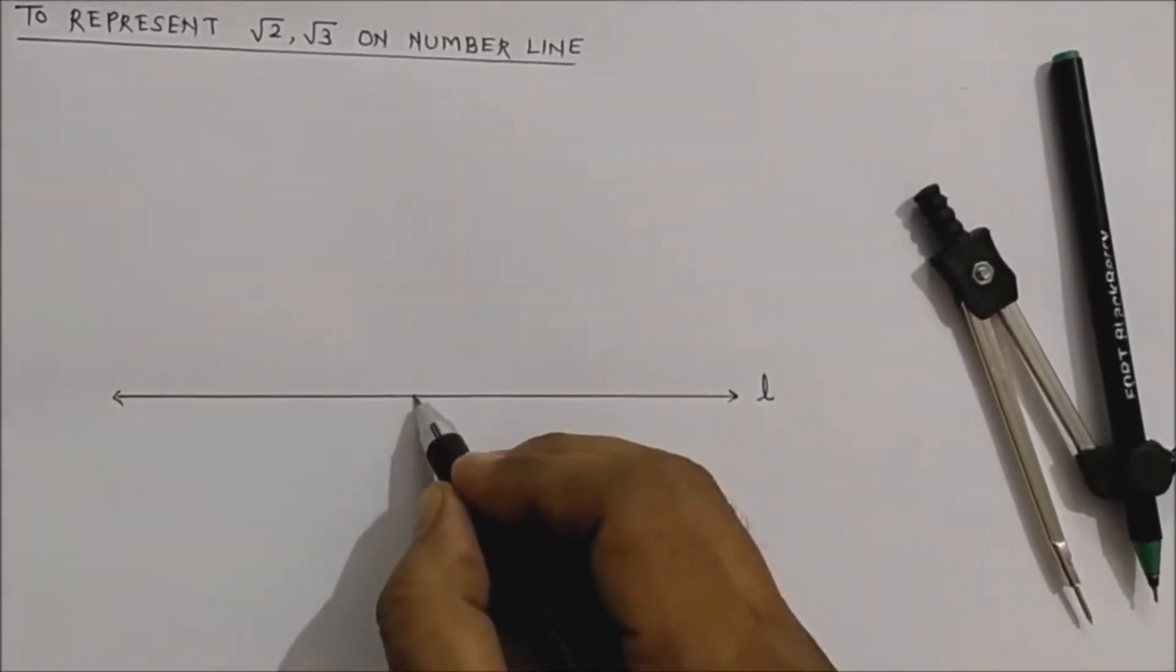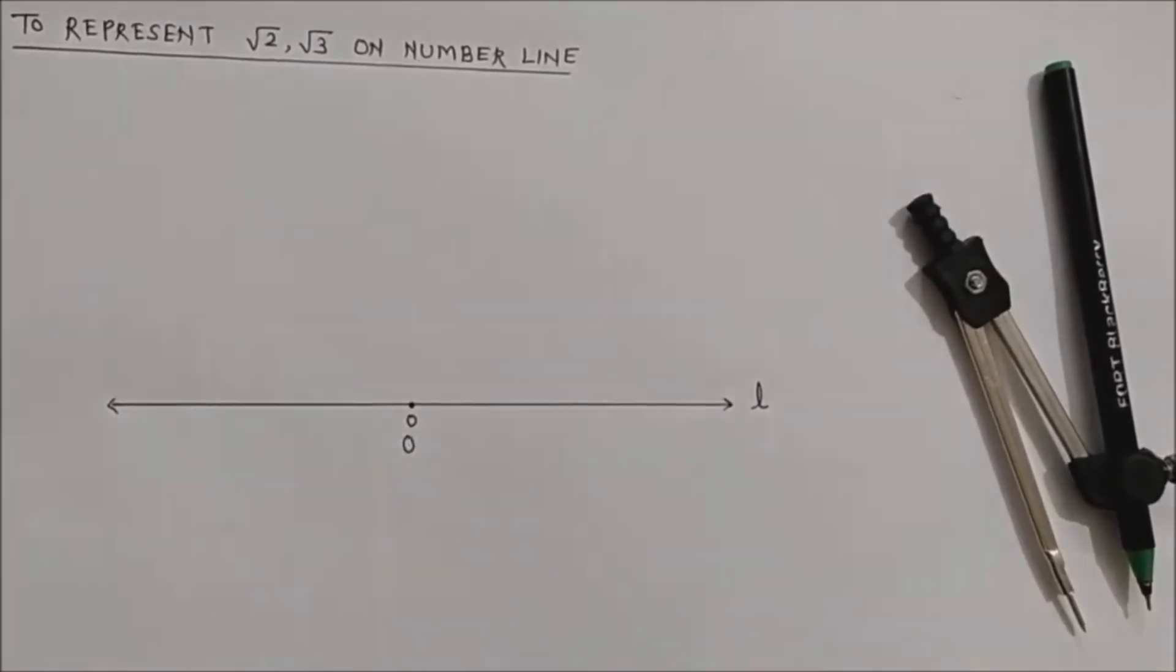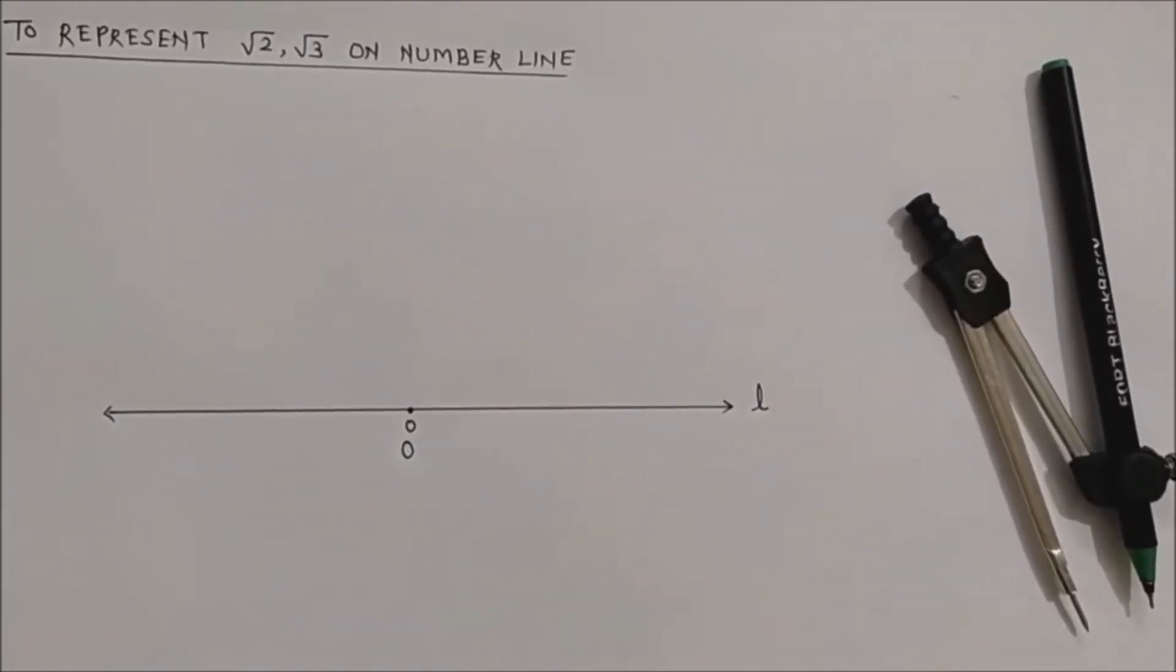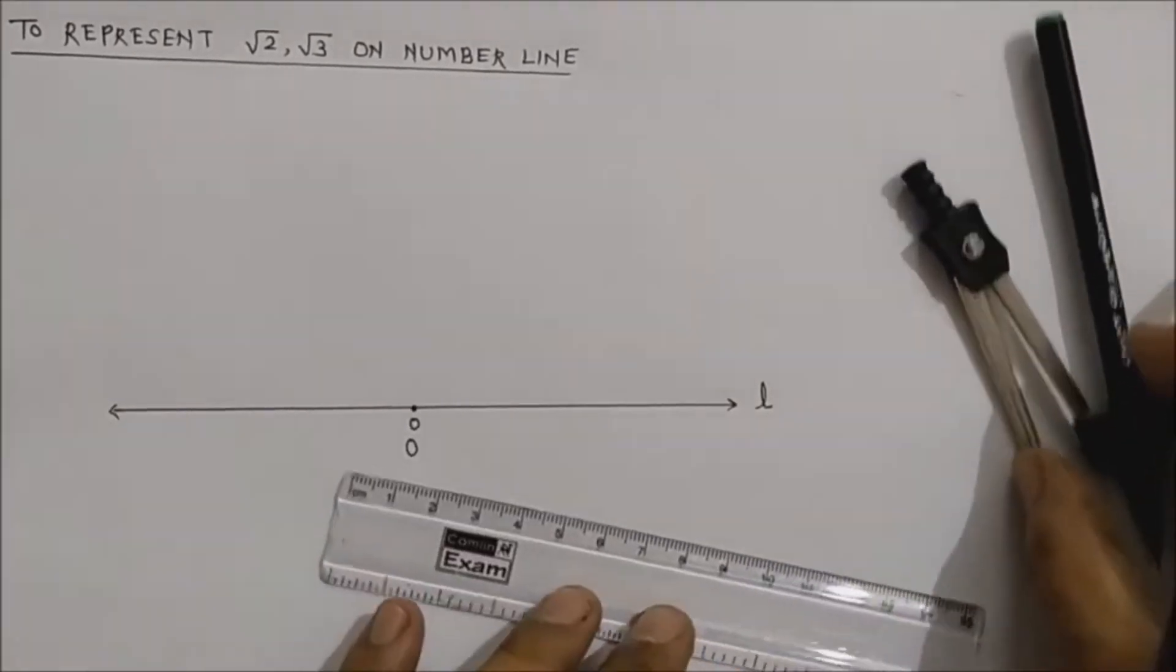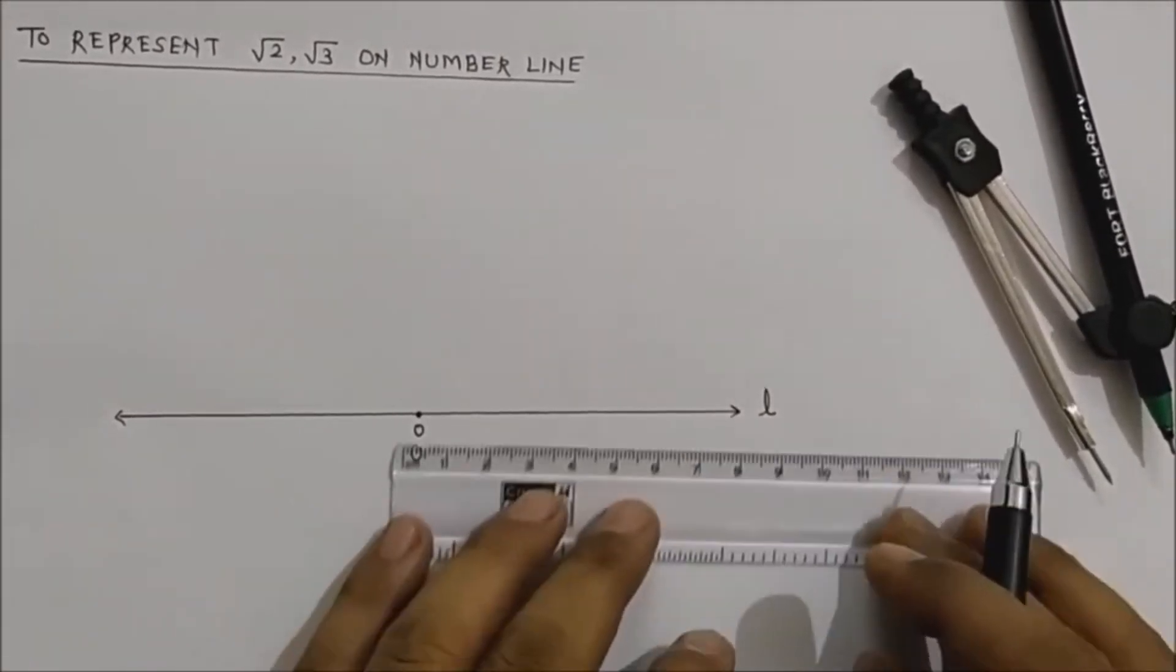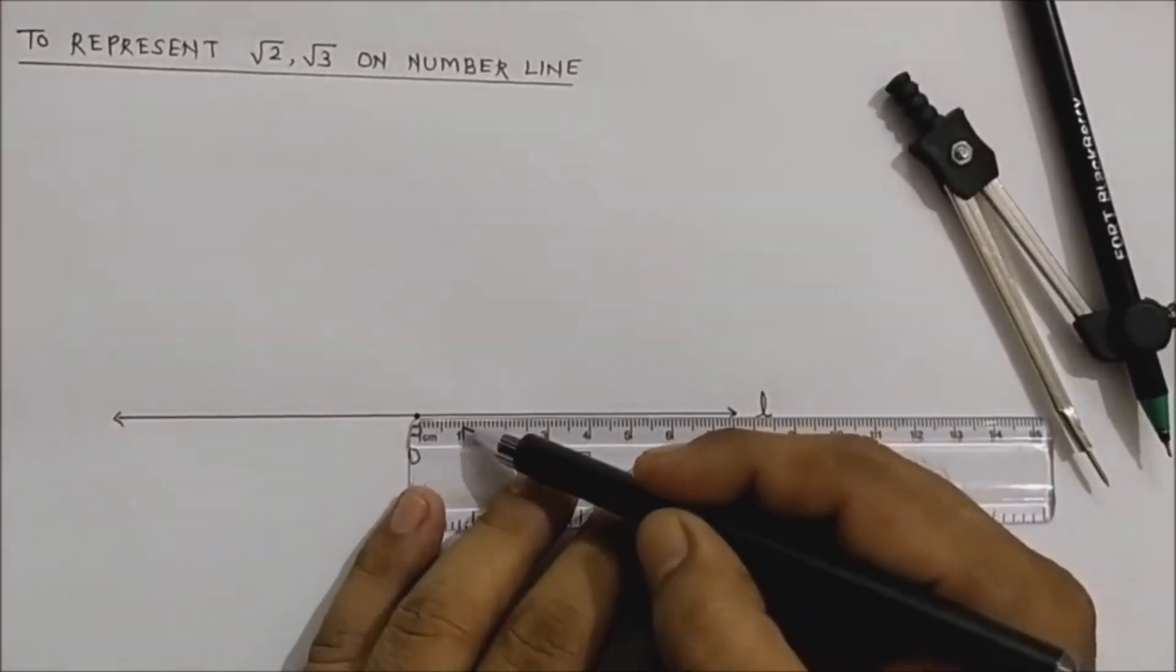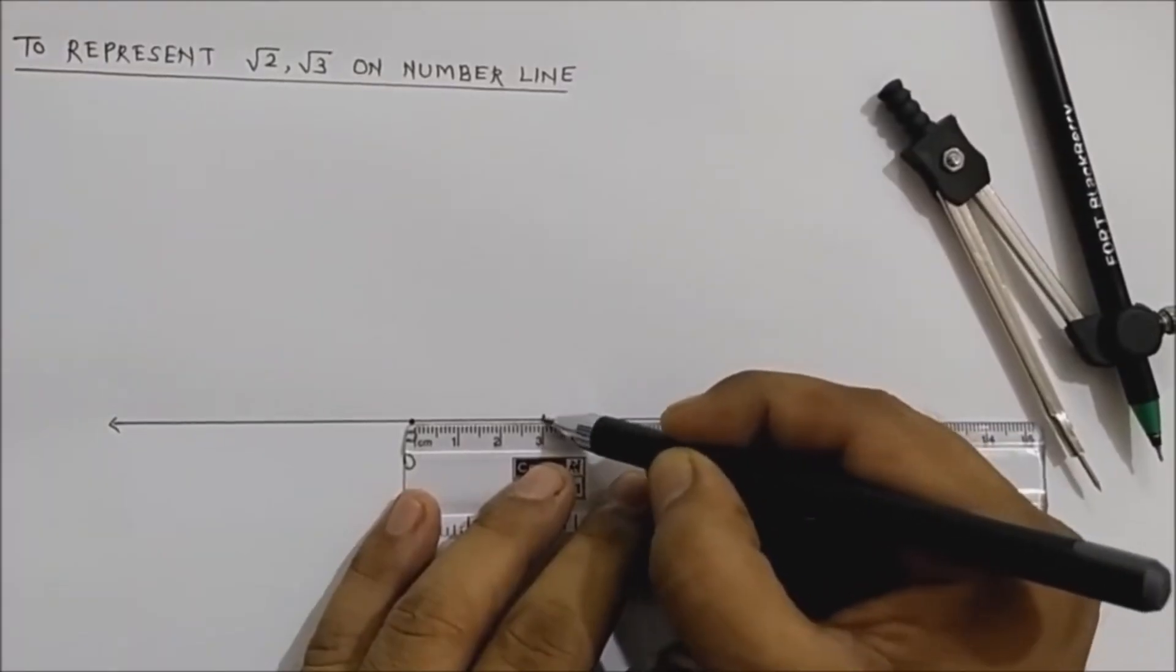Mark one point here as the origin and label this point as O. On the right side, we are going to take one more point at any distance. Suppose we are taking, say, this is 1, 2, 3 - we are taking 3 centimeters.